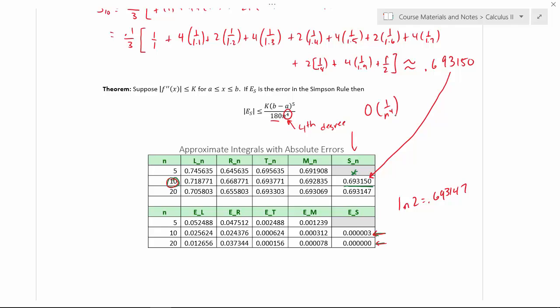So what that means is that if I double, that is multiply by 2 my number of subintervals, then that's the same as cutting my error by 1 over 2 to the fourth, or 1 sixteenth. So a doubling of your number of intervals will cut your error by a factor of 2 to the fourth.